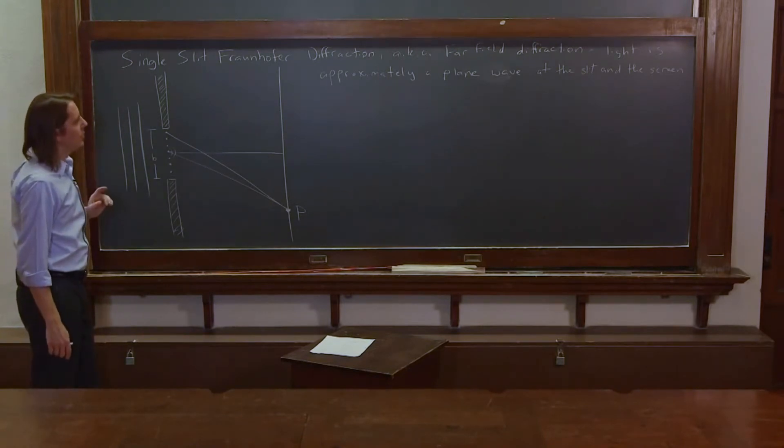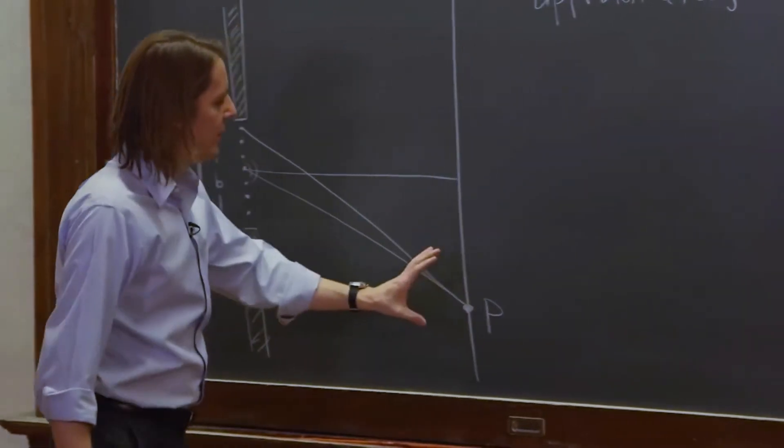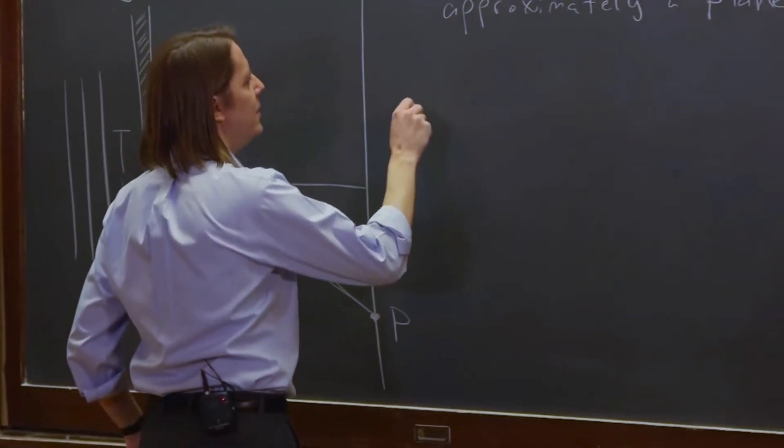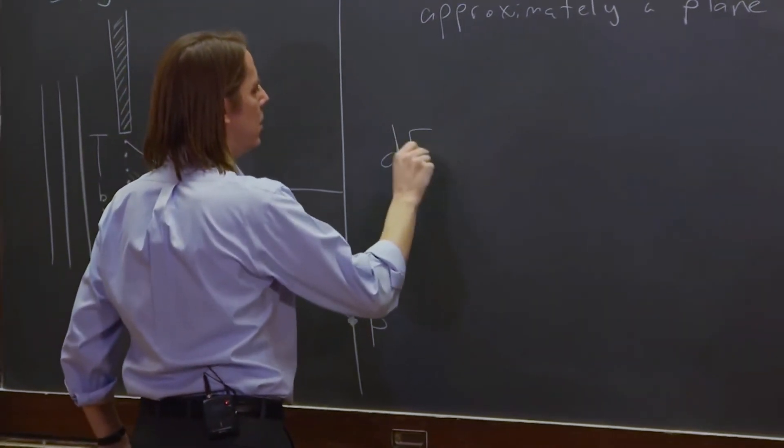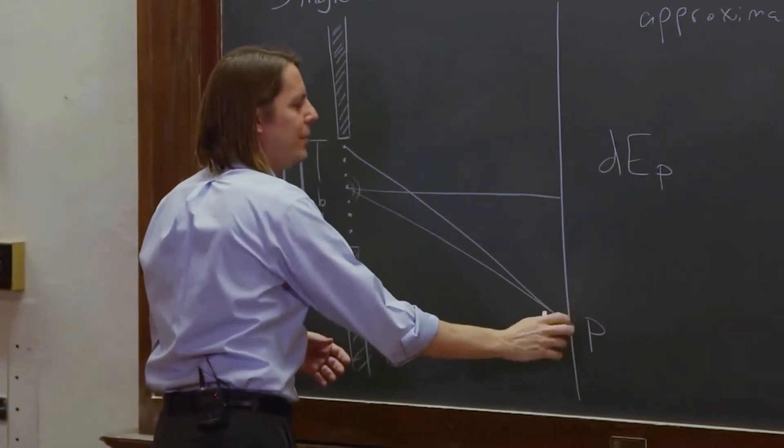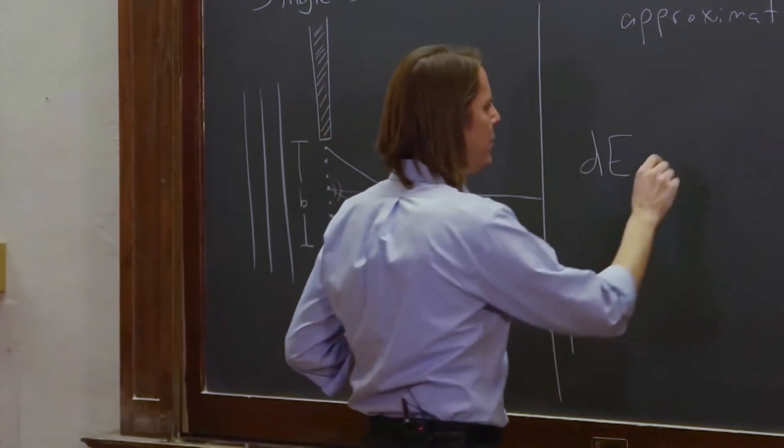So, just like with interference, the way we're going to find the intensity or the irradiance at point P is we're going to add it up. We're going to say the dEP, that's the differential electric field at P, is due to one of these little wavelets. So, what does dEP equal?